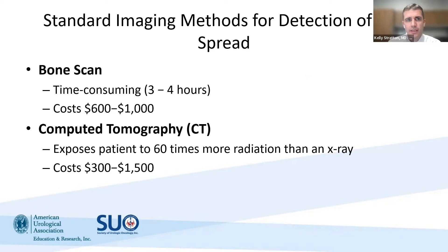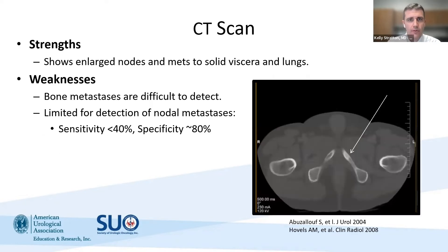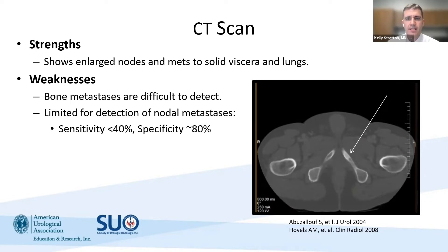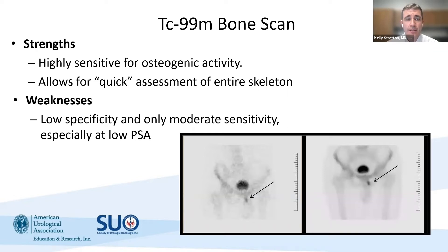This is conventional imaging. A bone scan is time-consuming but fairly accessible and affordable. CT scan has radiation exposure but is also available and affordable. CT scan's strength is that it can show enlarged lymph nodes and metastasis to solid viscera in the lungs; its weakness is that bone metastasis can be difficult to detect, and even when it detects nodal metastasis, sensitivity is less than 40% and specificity about 80%. A bone scan is highly sensitive for osteogenic activity and gives a quick assessment of the entire skeleton, but has low specificity and only moderate sensitivity, especially for patients at low PSA.